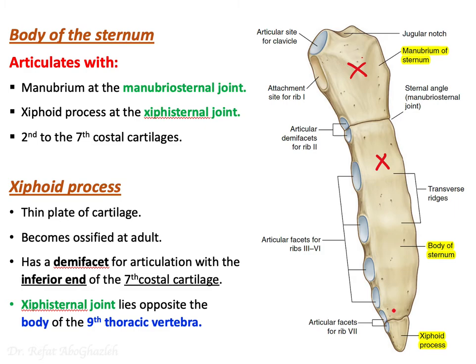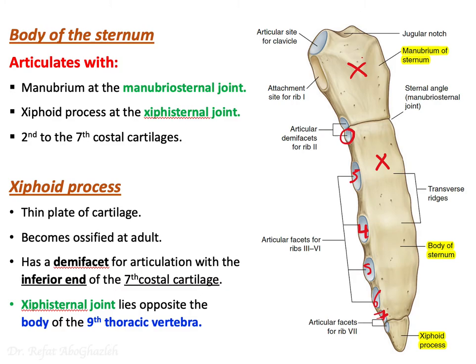The body of the sternum is the middle part. It articulates superiorly with the manubrium at the manubriosternal joint (sternal angle), and inferiorly with the xiphoid process at the xiphisternal joint. The body also articulates with the second through seventh costal cartilages.